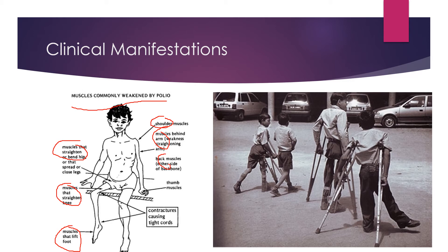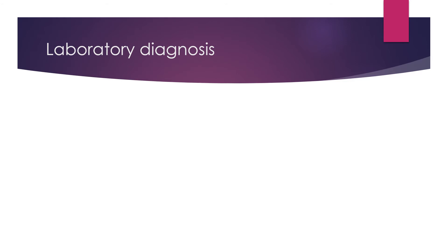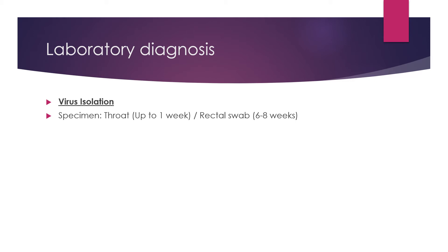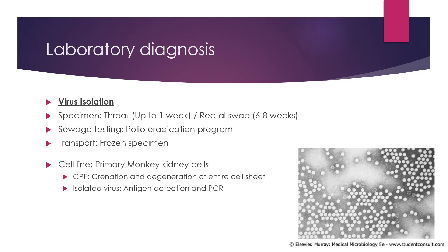For laboratory diagnosis, there are three major categories. First is virus isolation. Poliovirus may be recovered from throat swabs up to one week of illness, and from rectal or stool samples up to six to eight weeks. Long-term excretion has been observed in immunodeficient persons. Virus can also be isolated from CSF or blood in very rare cases. Sewage testing is routinely conducted under the polio eradication program to verify whether transmission is ongoing or interrupted.